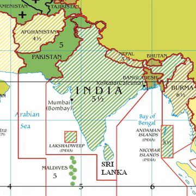To communicate the exact time to the public, the time is broadcast over the National All India Radio and Doordarshan Television Network. Telephone companies have dedicated phone numbers connected to mirror time servers that relay the precise time. Another increasingly popular means of obtaining the time is through Global Positioning System receivers.